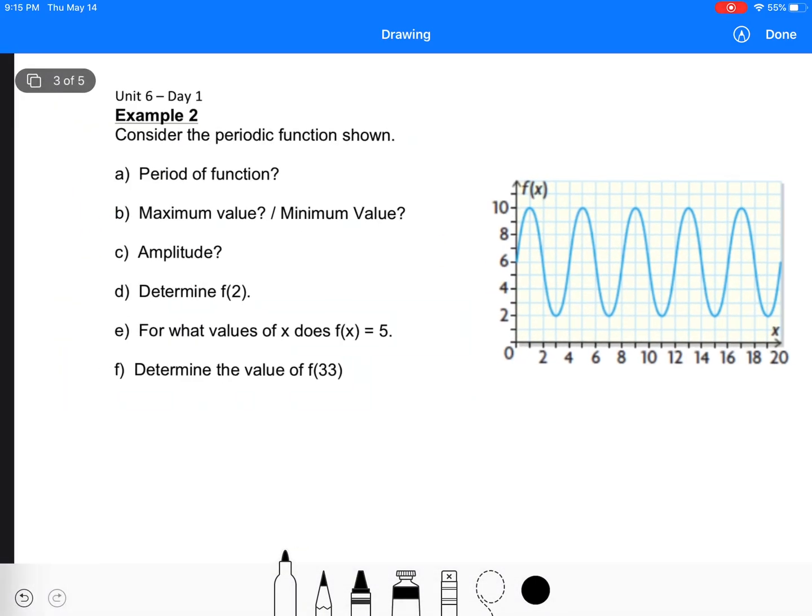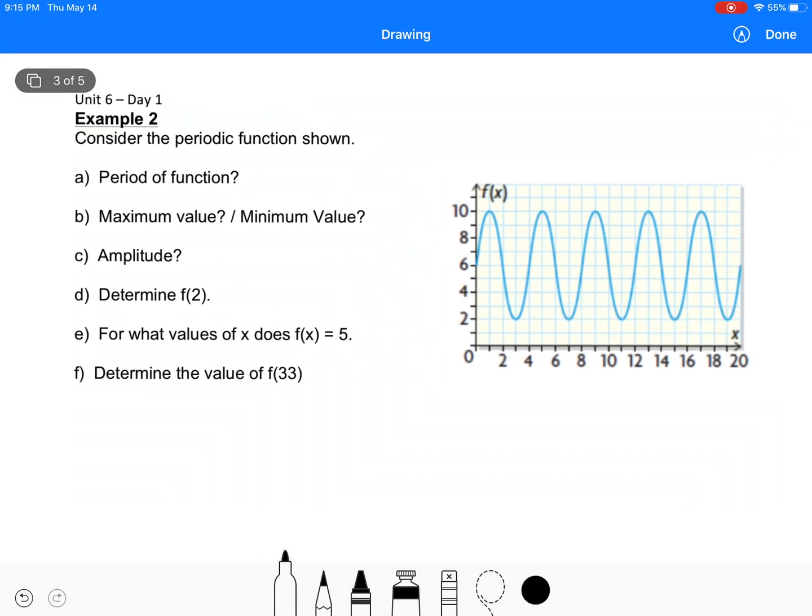Looking at this, so just kind of another example. So is this a periodic function? Yes, it is. It's continuously repeating itself. Our maximum number is 10. Our minimum number is 2. So maximum value is 10. Minimum value is 2. Another way to find the amplitude is just take your maximum minus your minimum and divide it by 2. Maximum minus minimum here would be 10 minus 2 is 8 over 2. And that's going to equal to 4. Now if I go 4 down from the top or 4 up from the bottom, I should get to the equation of my axis. Which in this case I do.